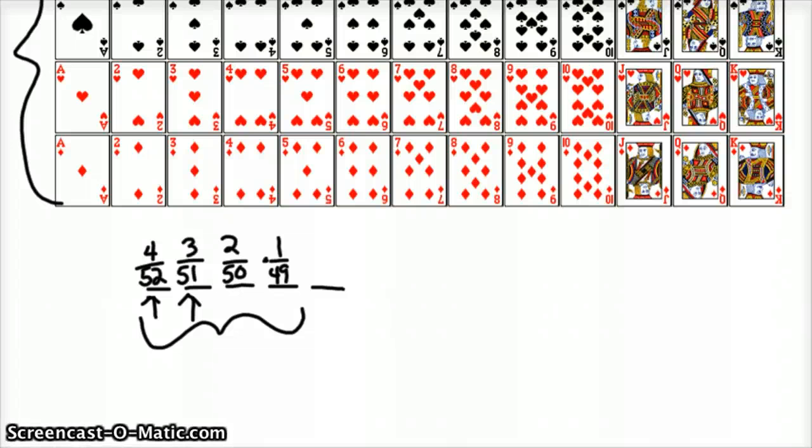Then that last card, there are 48 left in the deck, and I can choose any of the 48. So in this case we're really just multiplying by one, because 48 out of 48 is one.